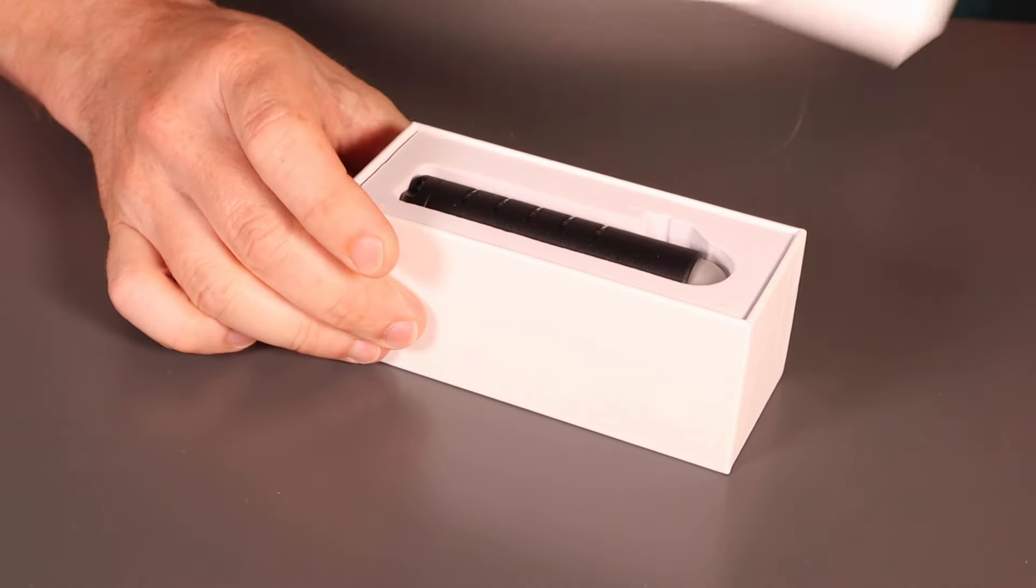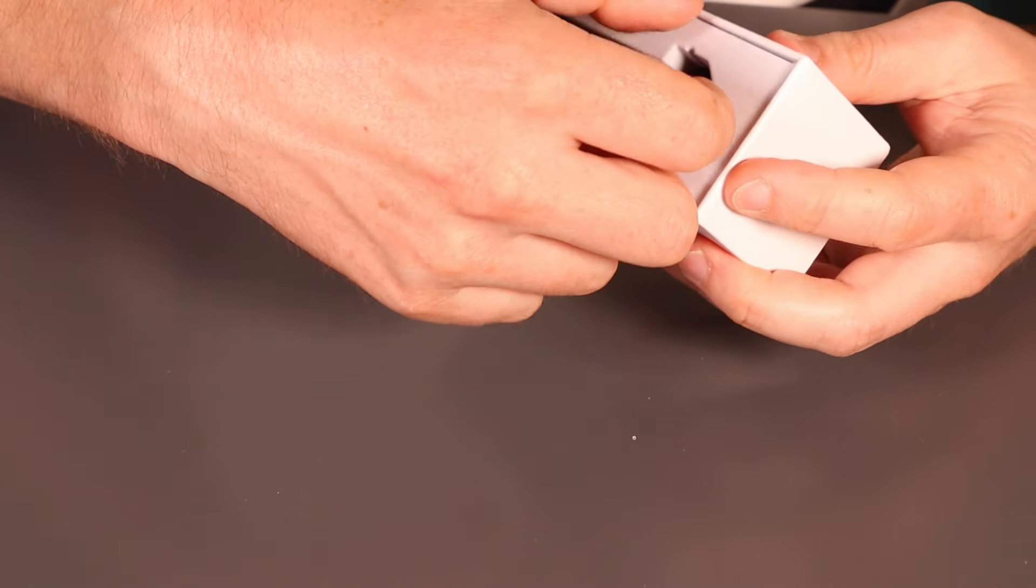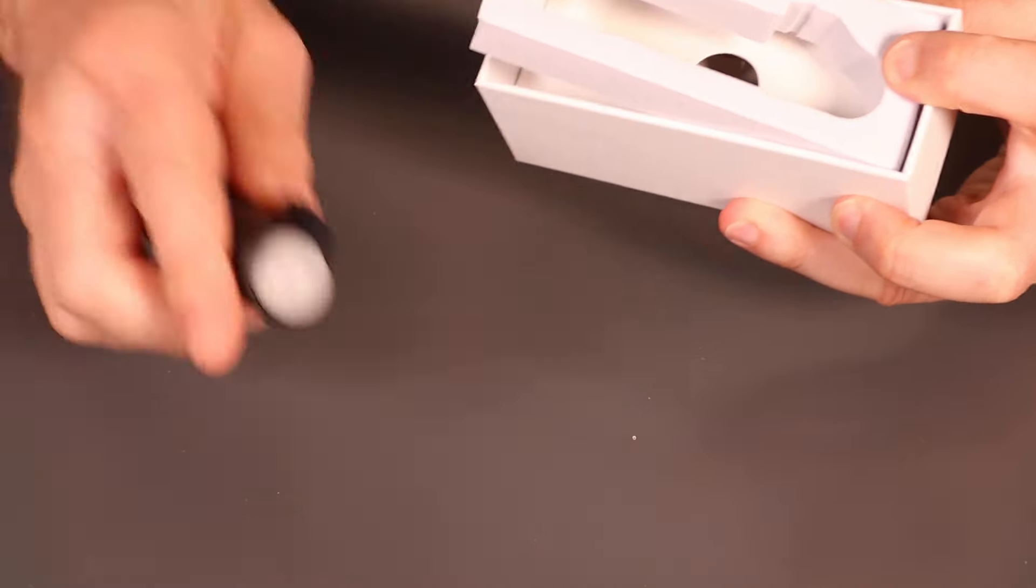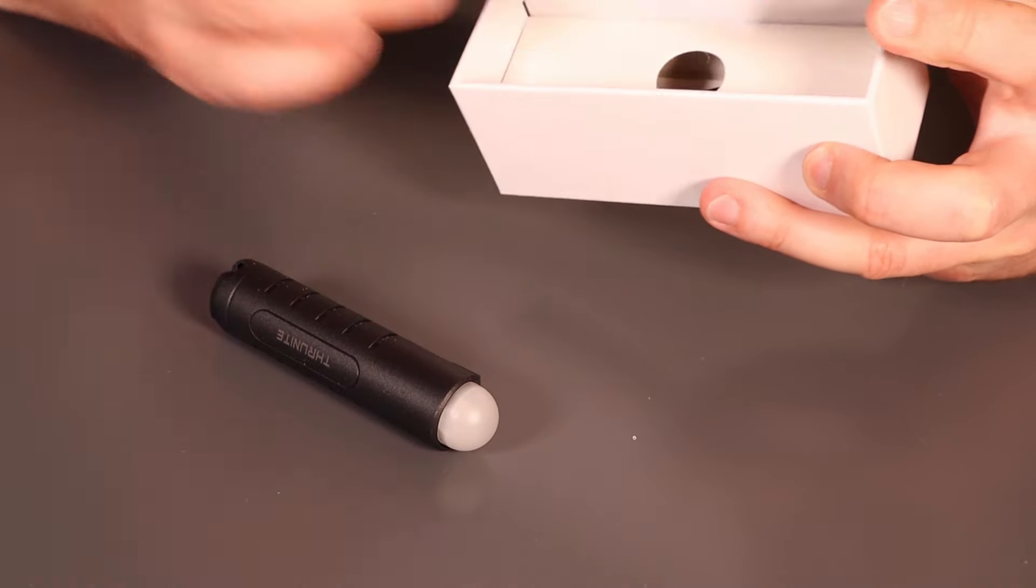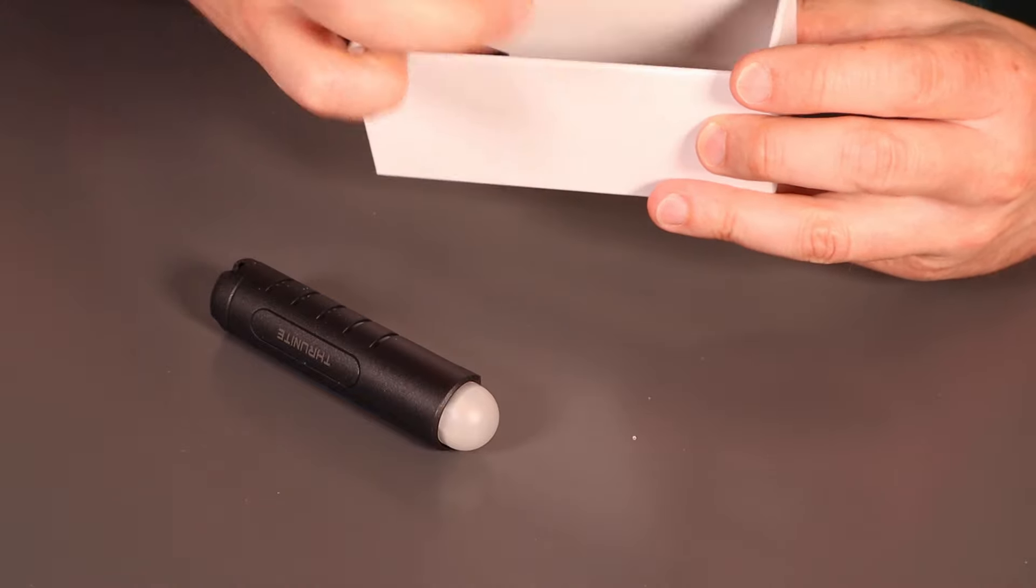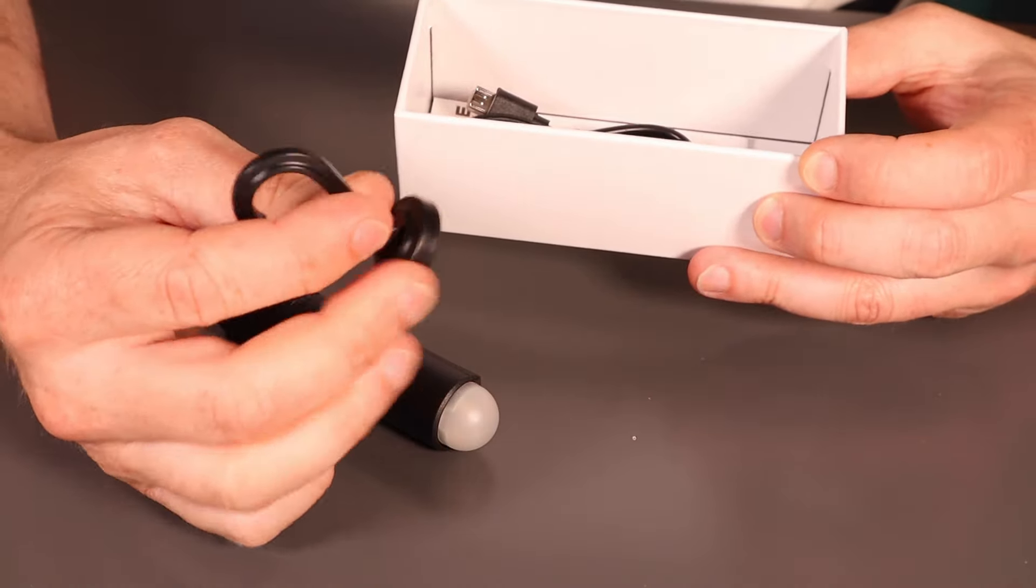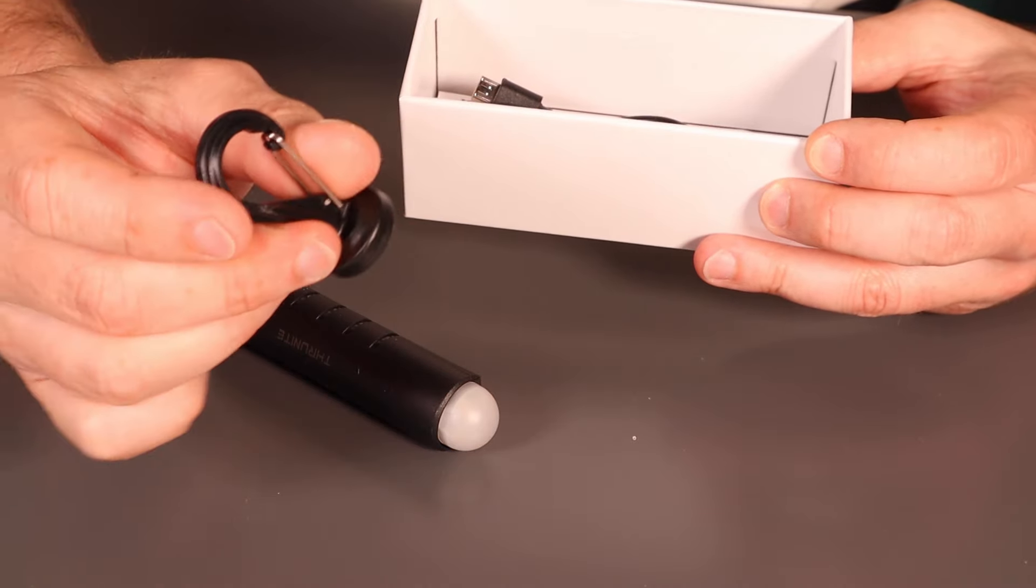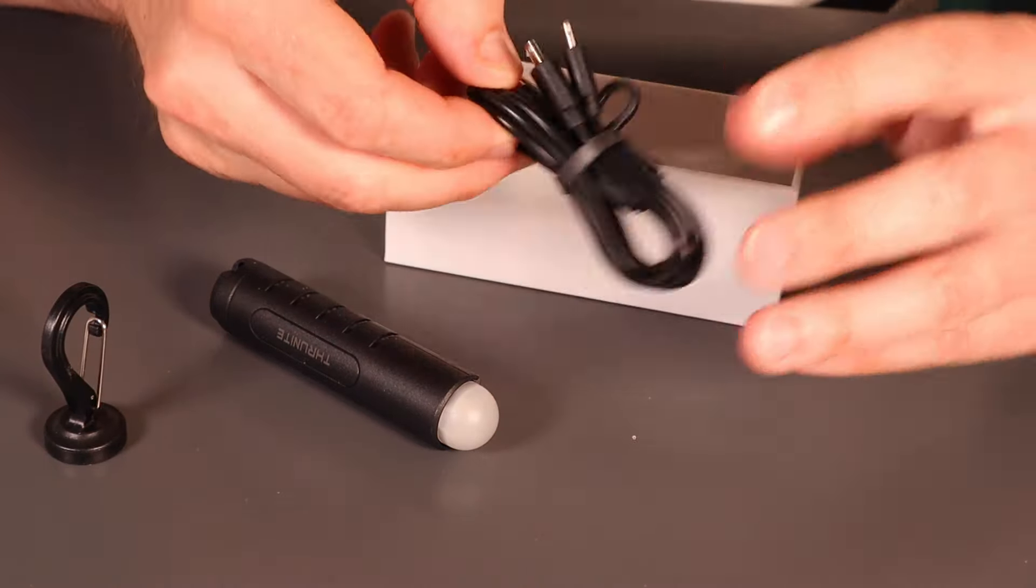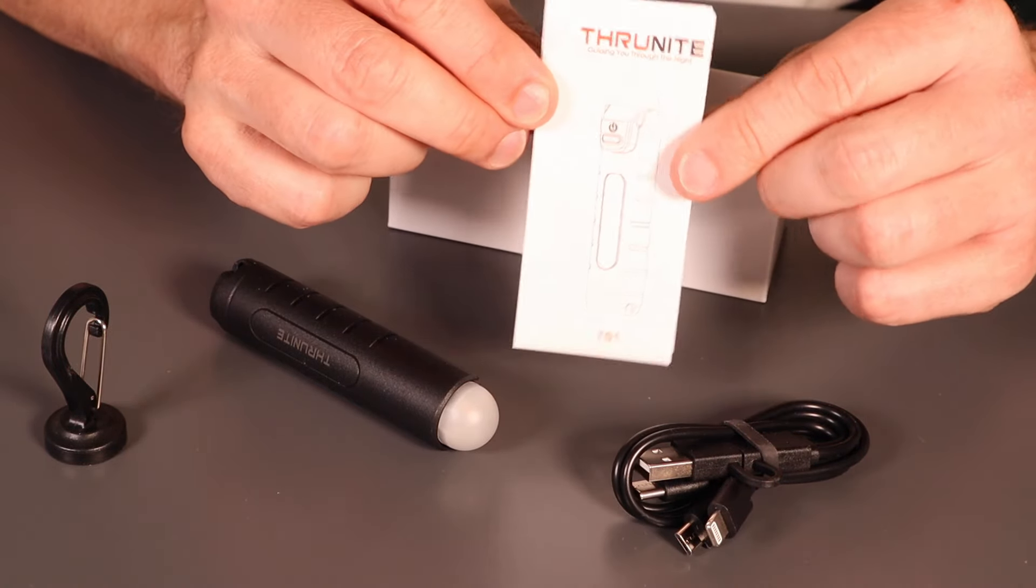Obviously got the lantern at the top there, so we'll pop that out and take a proper look at that in a moment. Then below you've got a few accessories and of course the instructions. You've got the magnetic tail hook, and we'll look at how that fits on in a moment. And you've got a charging cable.